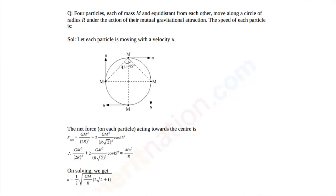You need to know that as a particle moves along a circle, it requires a certain centripetal force. The source of that centripetal force is the mutual force of gravitation acting between the particles. To solve this, focus on one particular particle, account for all forces acting towards the center, take a reference of 45-degree inclination, find the respective components, and find their vectorial resultant.